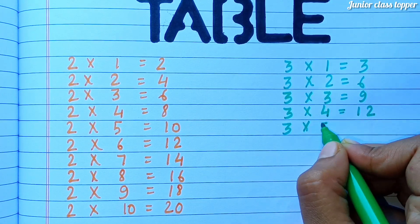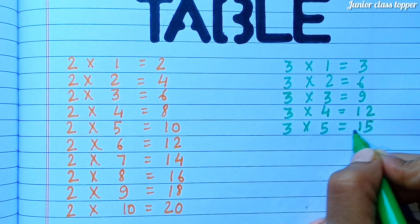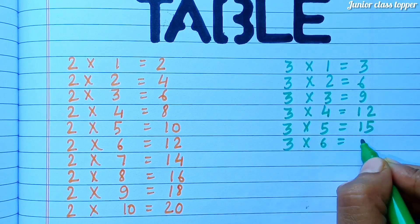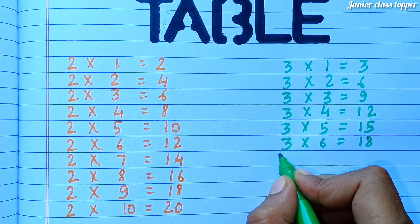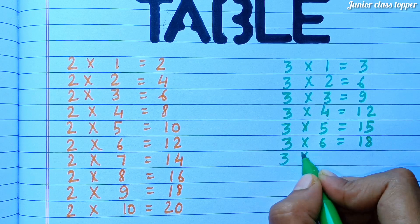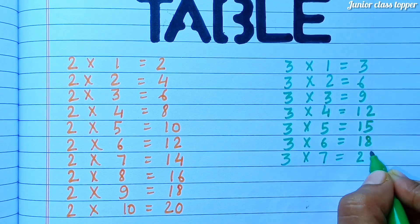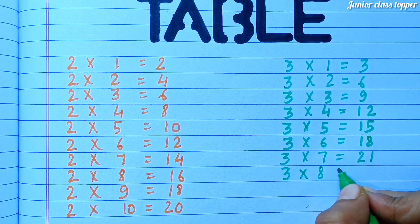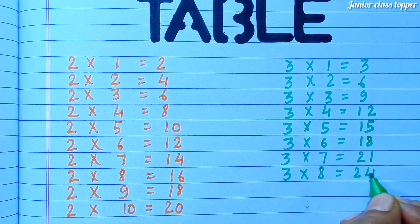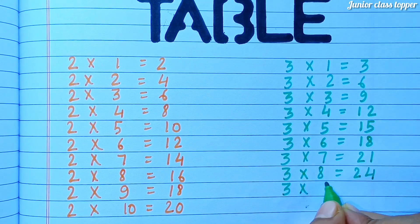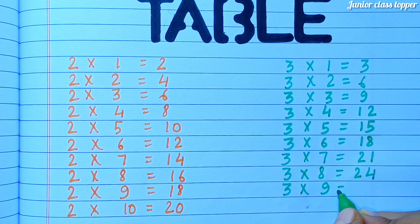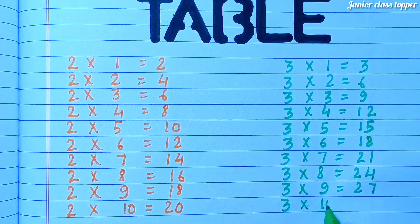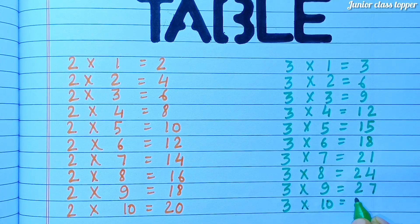3 5s are 15. 3 6s are 18. 3 7s are 21. 3 8s are 24. 3 9s are 27. 3 10s are 30.